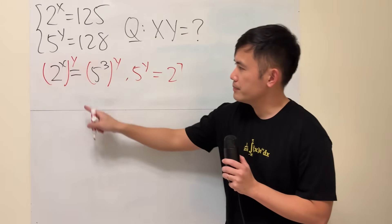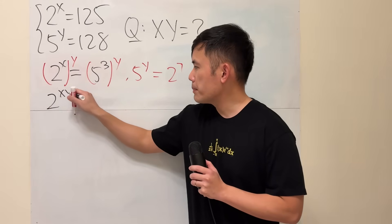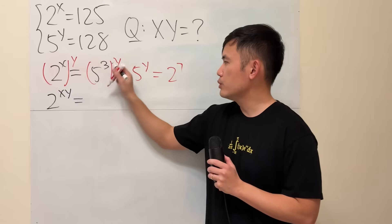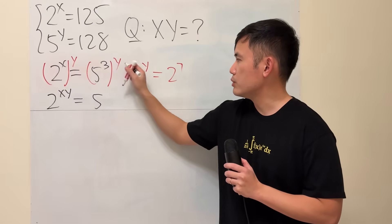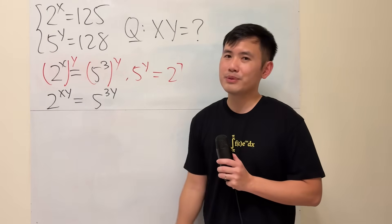Why? Well, because now we can just multiply the exponents, and we get 2 to the xy power being equal to, do the same thing here, 5 to the 3 times y's power. Okay, so as we can see, we have the x times y here.